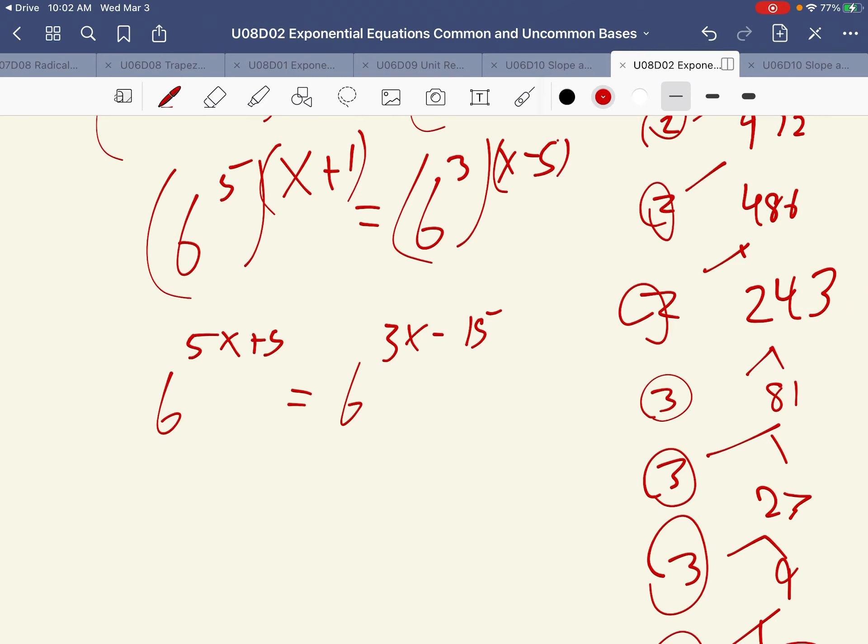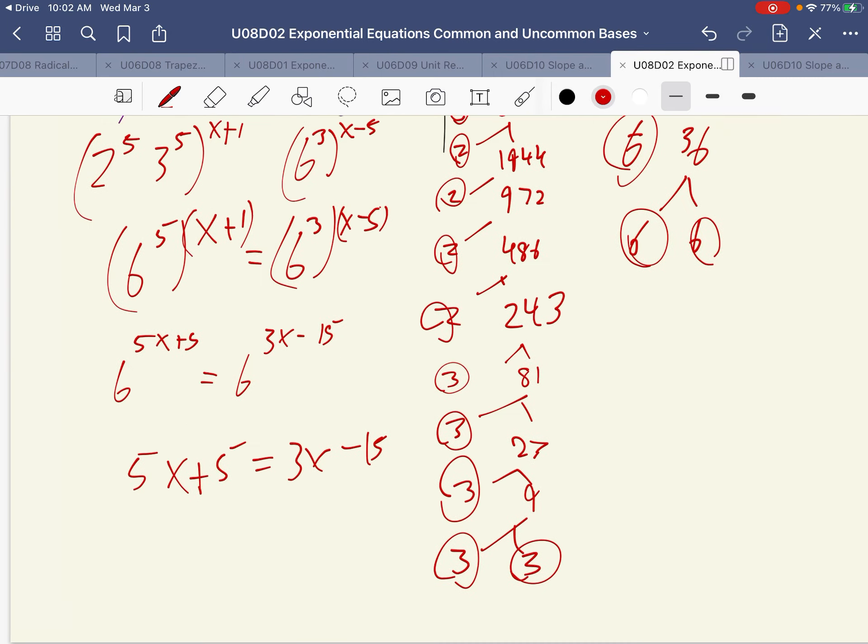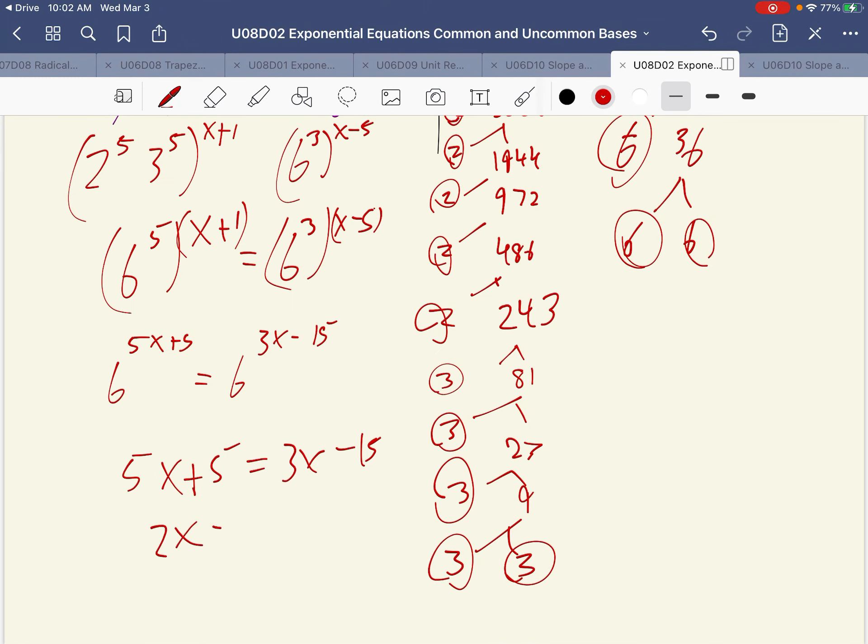So 5x plus 5 should be equal to 3x minus 15. So that would mean 2x is equal to negative 20 or x is equal to negative 10.